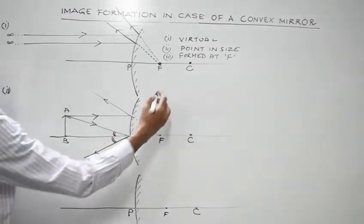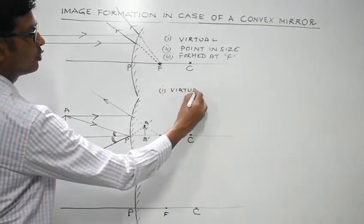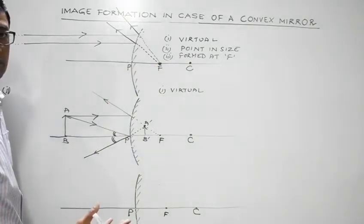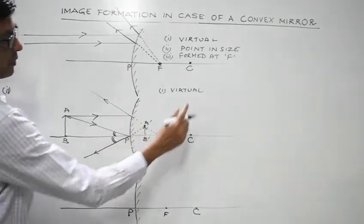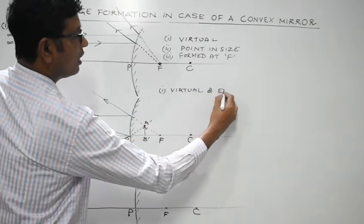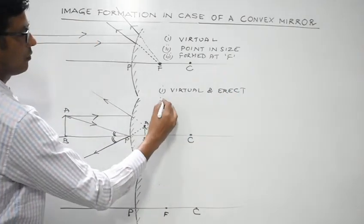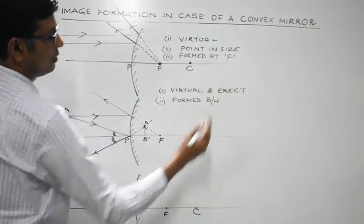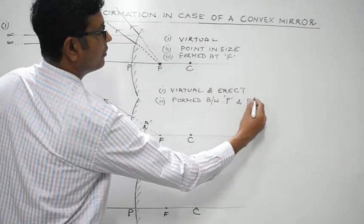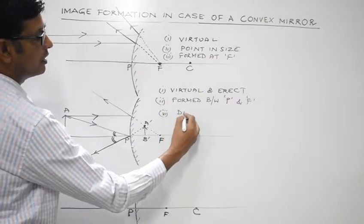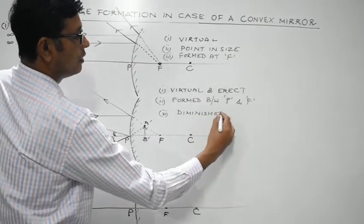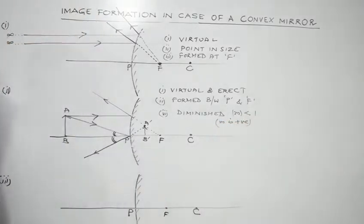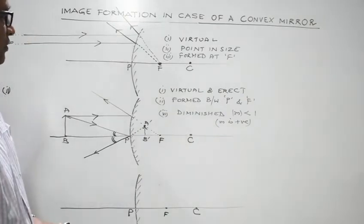So the image is virtual. It is formed behind the mirror and it is erect — so we write virtual and erect. The image is formed between the pole P and the focus F. The image is diminished, meaning magnification m is less than 1, and since the image is erect, linear magnification is positive.